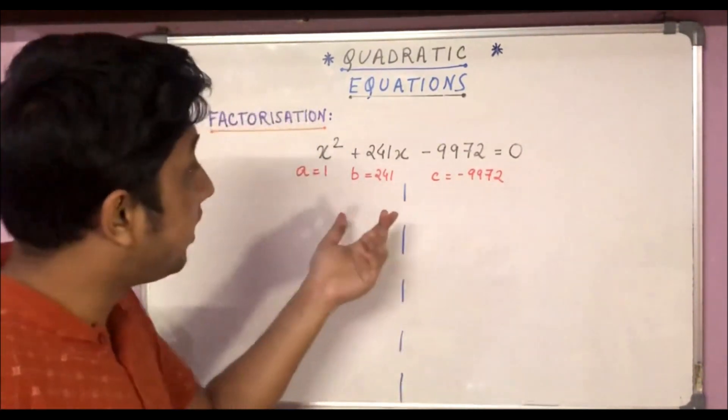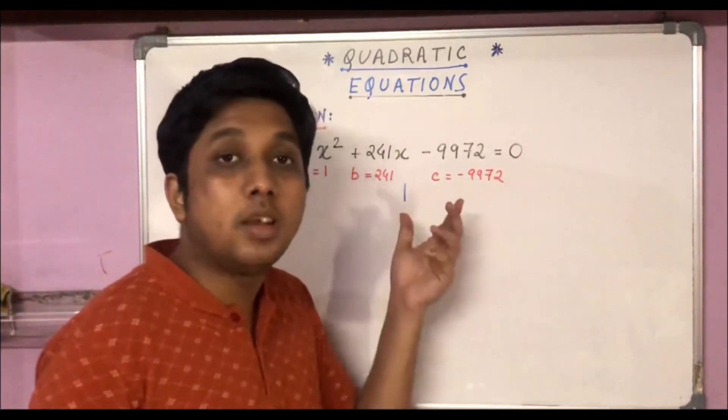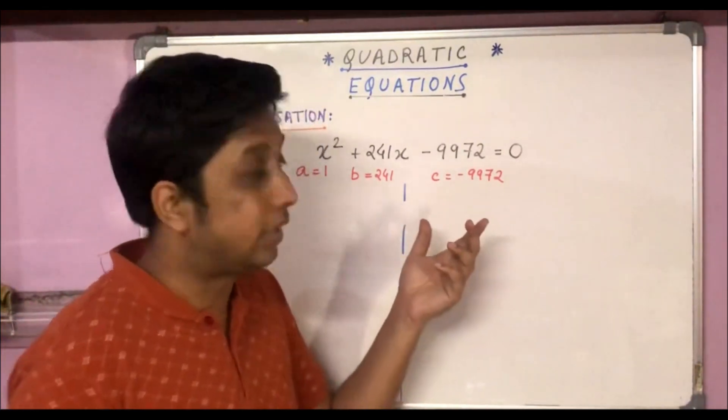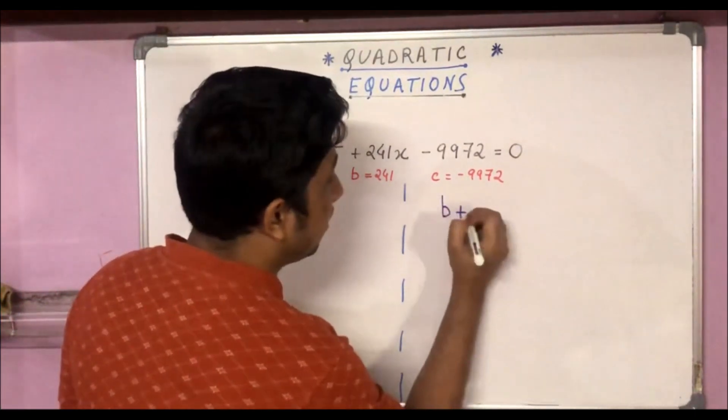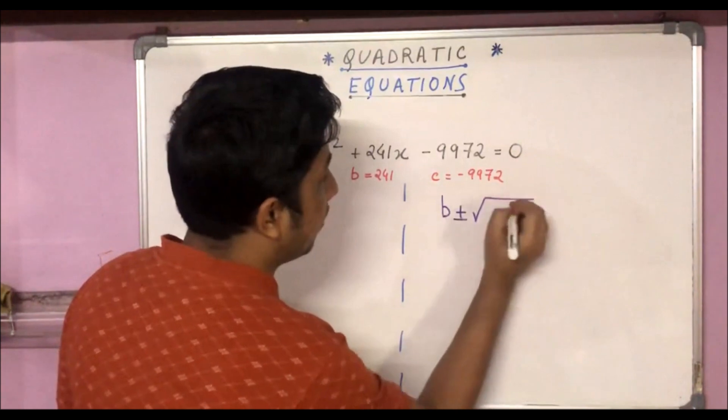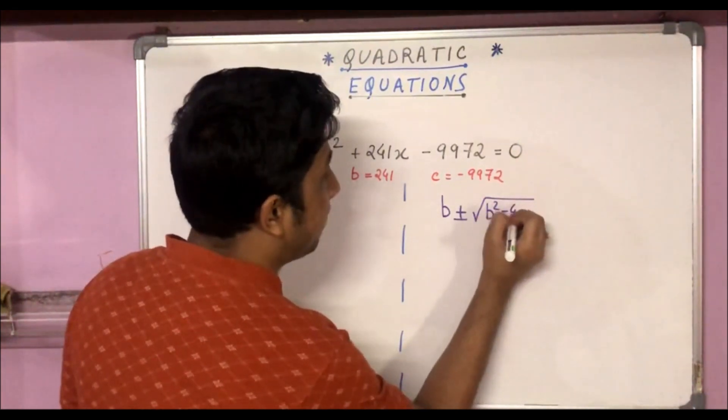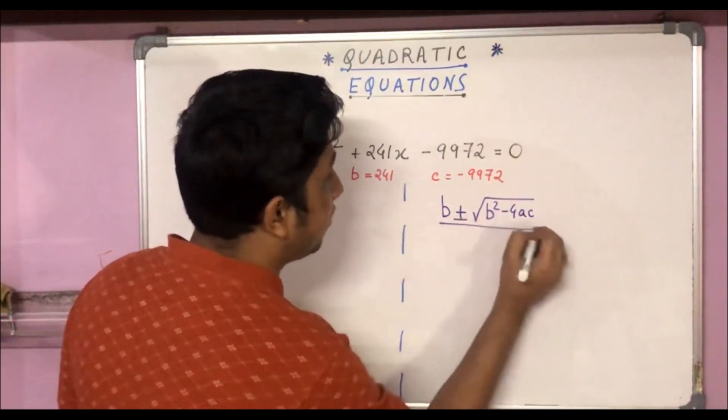So let's use the trick and see if we can find the middle-term break values in this case too. The expression I had said to use was b plus minus root over b² - 4ac by 2.